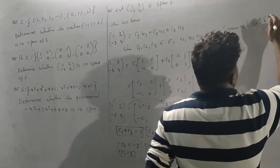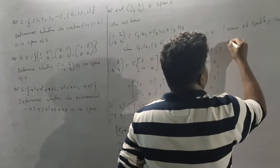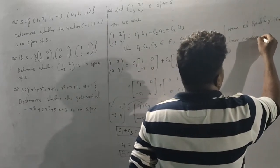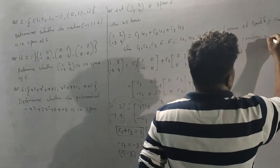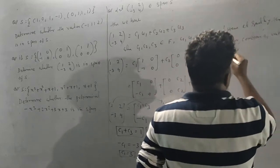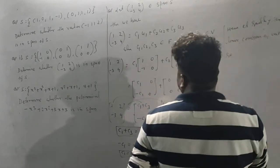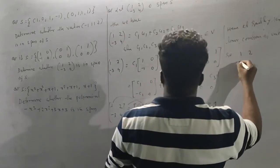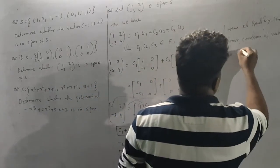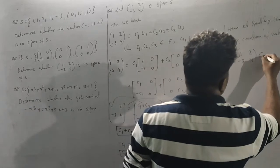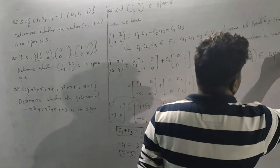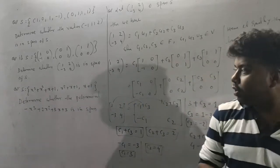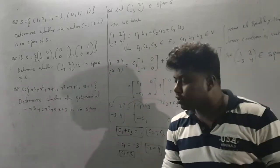Since we found valid scalars C1, C2, and C3, the vector (1, 2, -3, 4) is a linear combination of the vectors and therefore belongs to Span S.